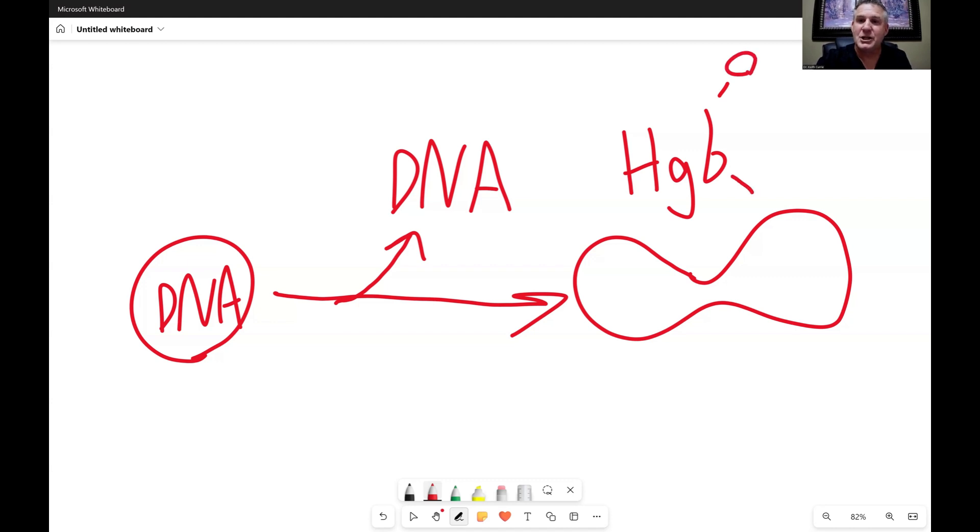So each hemoglobin molecule combines to four oxygens. Now, why this is important is because oxygen can come and go all the time. Oxygen coming and going off of that hemoglobin molecule. And there's trillions of hemoglobin molecules in one red blood cell. So if you think that each one can bind four oxygens and there's trillions of those, that's a lot of oxygen binding in one tiny little microscopic red blood cell.